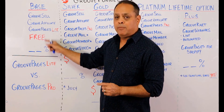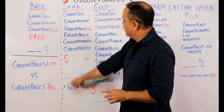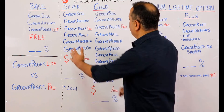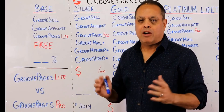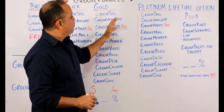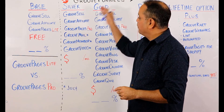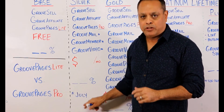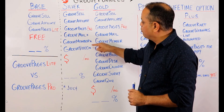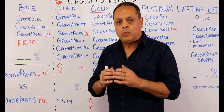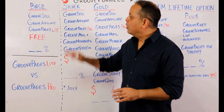This dotted line here says GrooveFunnels — so everything over here is all of the GrooveFunnels suite and what's included. Today, the lifetime upgrade is for everything you see here, the platinum lifetime upgrade. The silver and gold plans are coming out in July when we fully launch GrooveFunnels. We have a little asterisk for GrooveMail, GrooveMember, and GrooveVideo, as well as a timeline for everything else on this whiteboard.